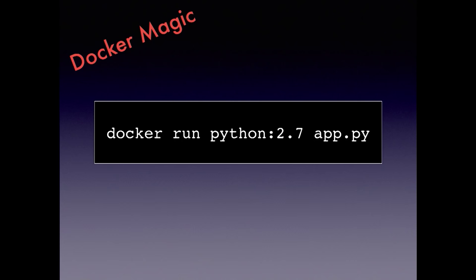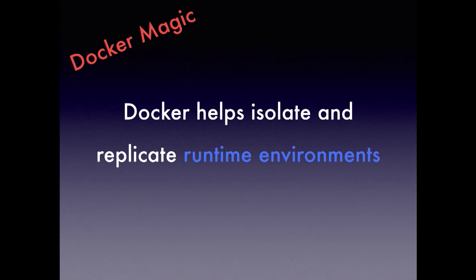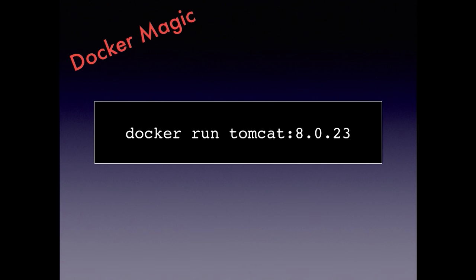Docker helps isolate and replicate our development environments. For example, if you want to run a Python script, you just run this command line and you don't have to bother about which platform you are on or what you have installed in your machine — you just do Docker and that's the magic. Docker also helps to isolate and replicate runtime environments. You can run Tomcat the same way without worrying about having Java or some other version of Tomcat installed. You just issue this command and everything just works.